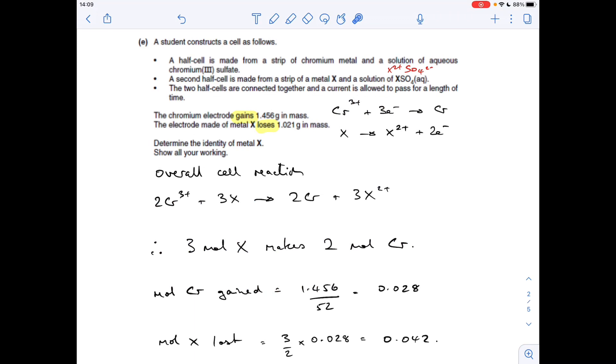Moving on to a tricky calculation now. A student makes a cell from two half cells. The first one contains chromium metal, chromium solid, and a solution of aqueous chromium 3 sulfate. The second cell is made from a strip of metal X and a solution of XSO4. The sulfate ion is a 2- charge, so because it's a 1 to 1 ratio in the formula, X must be in its 2+ oxidation state.